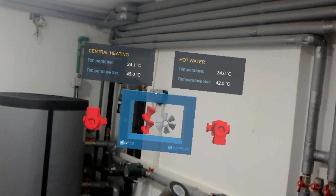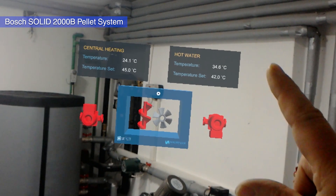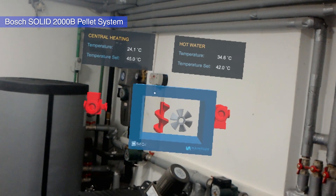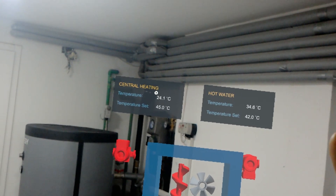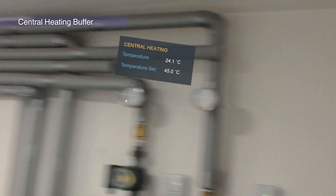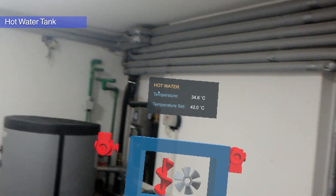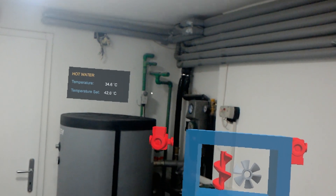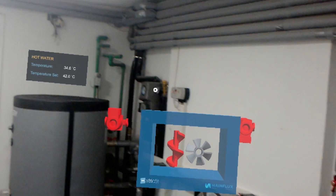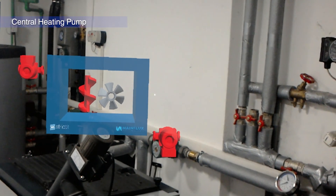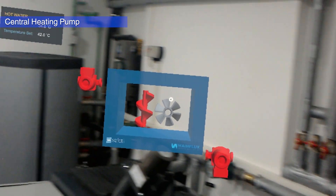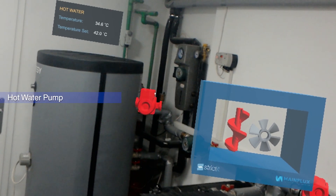The heating system consists of the Bosch Solid 2000B pellet system, a central heating buffer, and a hot water tank which is connected to solar hot water panels on the roof. The water circulates through the system by pumps — the central heating pump and the hot water pump.